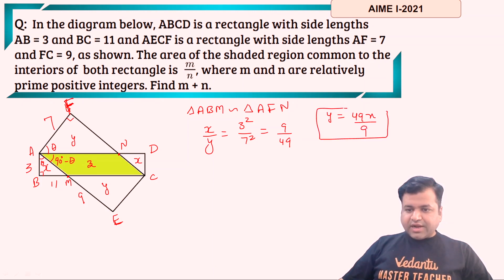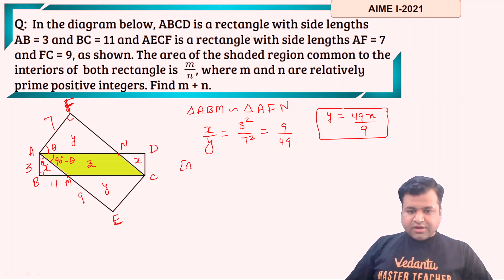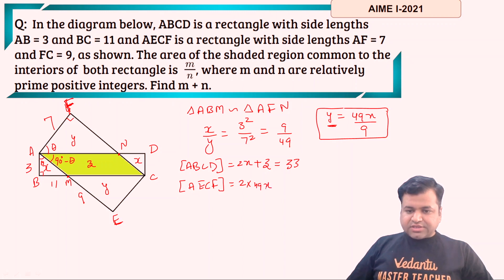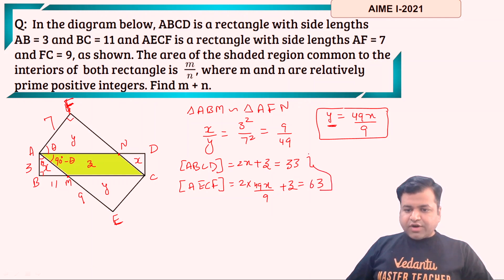We know that for similar triangles the ratio of areas equals the ratio of the squares of their sides. So x upon y equals 3 squared upon 7 squared, that is 9 upon 49. So the value of y is nothing but 49x upon 9. This is the first relation we got. If I say the area of rectangle ABCD, that is 2x + z = 11 × 3 = 33.